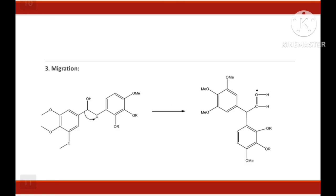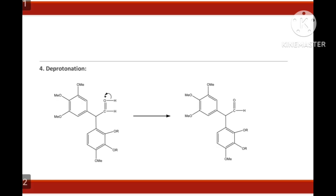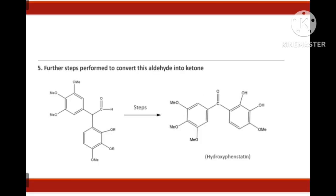Third step is migration. Migration of a group occurs depending upon its migratory aptitude. The group which is good electron donating will migrate preferentially. Fourth step is deprotonation. Here deprotonation occurs and as a result aldehyde will form. And this step is the rearrangement step. Then various steps are taken to convert this aldehyde to ketone including oxidation and we will obtain our targeted molecule hydroxyphenstatin.